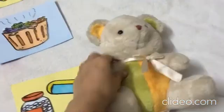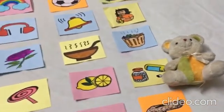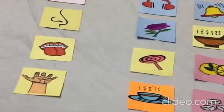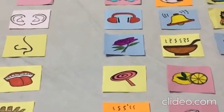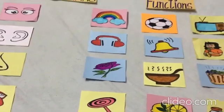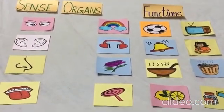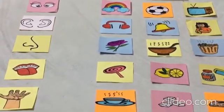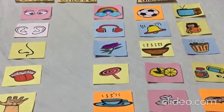For example, we can touch this teddy and feel that it is very soft. So how are we able to do this? With the help of our skin. I hope now you all are aware about these sense organs and their functions with this flash card activity.